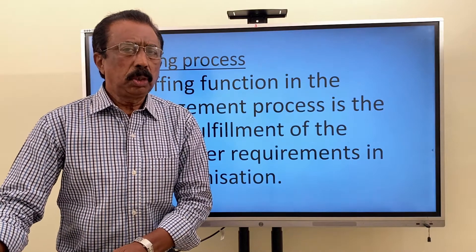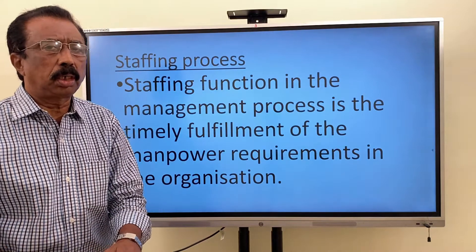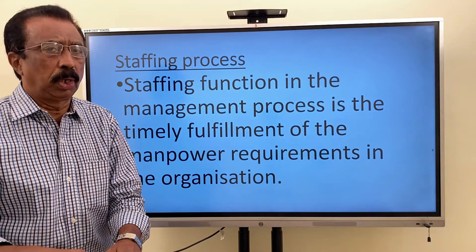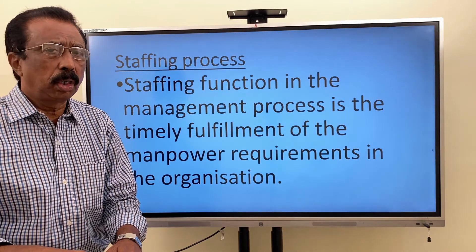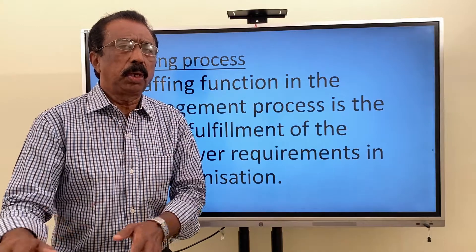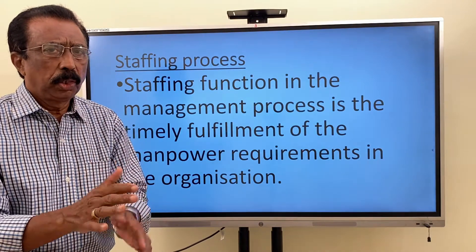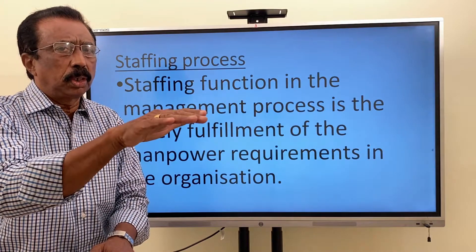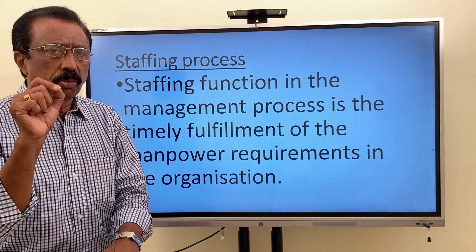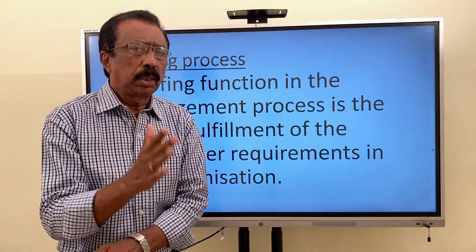Now we are going to move into the staffing process — that means the steps in the staffing function. In all our chapters — planning, organizing, etc. — process or steps means we have to follow them one by one. Unlike advantages or limitations, where points can be written in any order, when it comes to the staffing process, it is sequential — like an order. You go to the first step, then the second, then the third, and so on. You have to write the answer in that order.